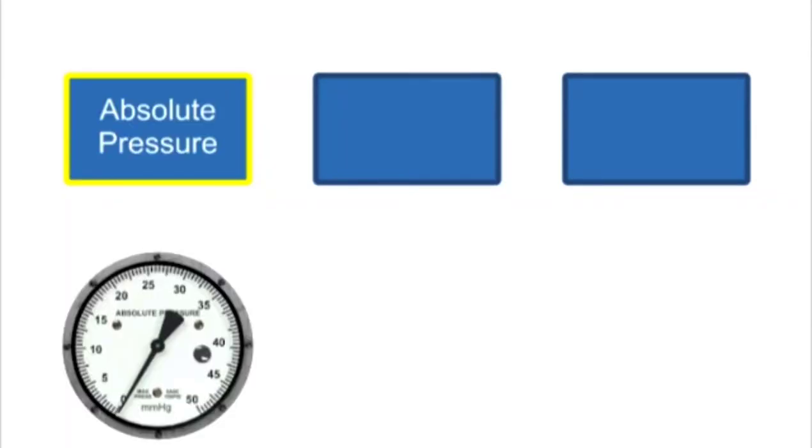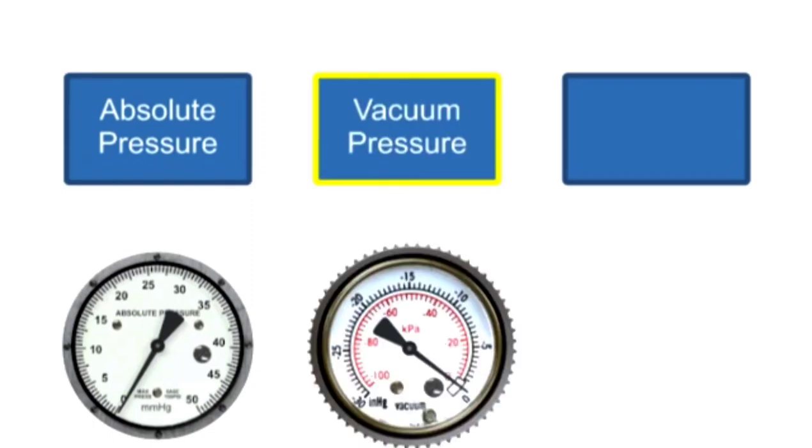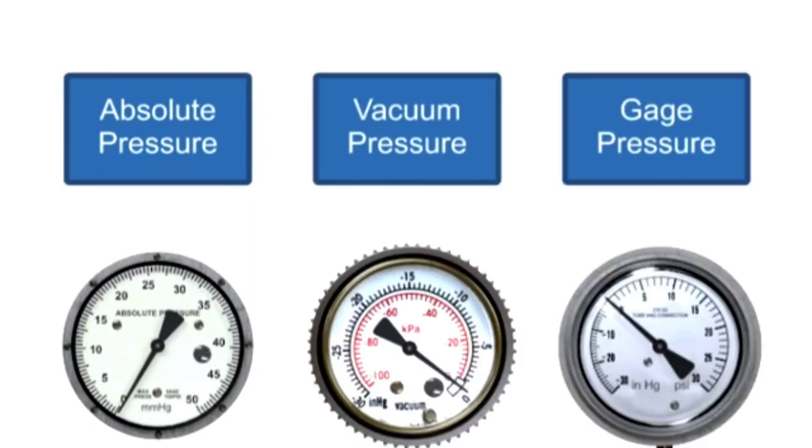Pressure measurements show pressure values that are compared to a reference point. Common scales for pressure measurements include absolute pressure, vacuum pressure, and gauge pressure, and are characterized by the reference pressure used.